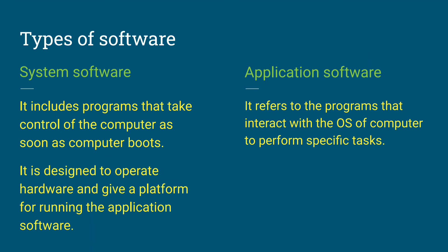System software is the program that takes control of the computer as soon as the computer boots. When the computer is switched on, the operating system loads and gets activated. So from the starting of your computer, the system software gets active, and it is designed to operate the hardware and give a platform for running application software.